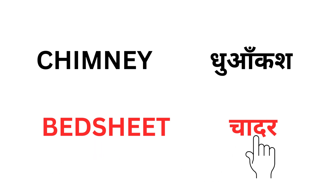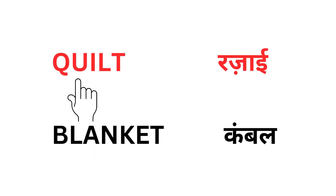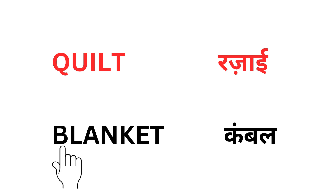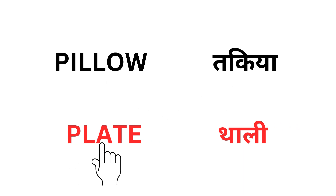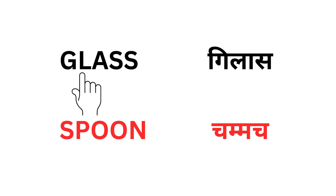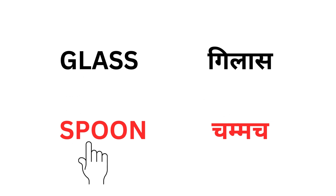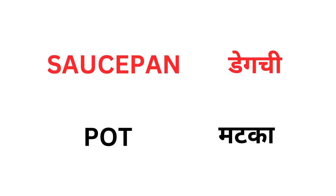Bed Sheet — Chaadar. Quilt — Rajai. Blanket — Kambal. Pillow — Takiyah. Plate — Thali. Glass — Gilaas. Spoon — Chammach. Saucepan — Dekchi.